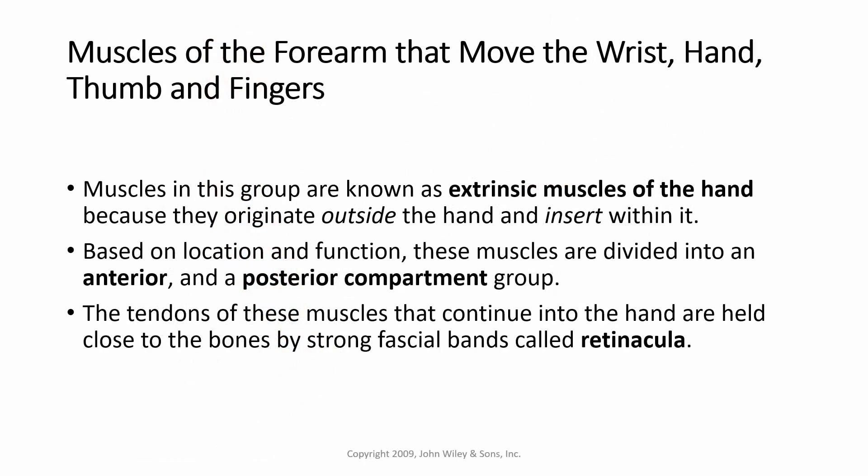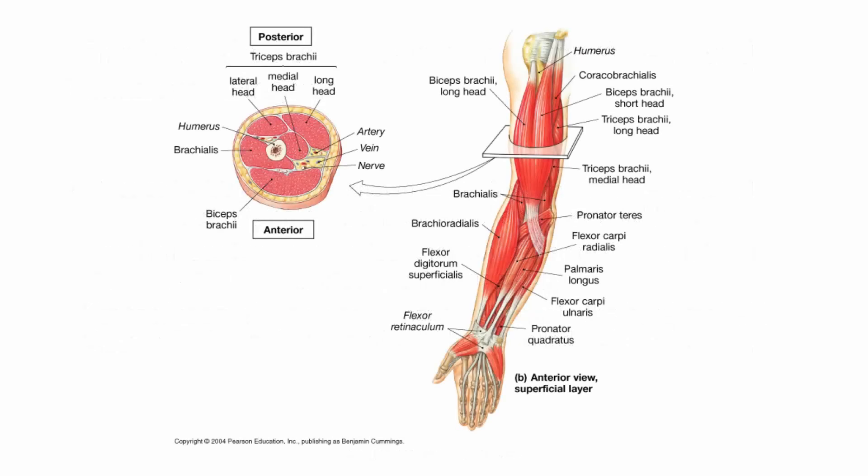Muscles of the forearm that move the wrist, hand, thumb, and fingers are known as extrinsic muscles of the hand because they originate outside the hand and insert within it. Based on location and function, these muscles are divided into anterior and posterior compartment groups. The tendons that continue into the hand are held close to the bone by a strong fascial band called a retinacula. Here's an example — the flexor retinacula.